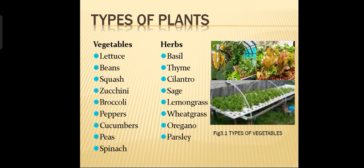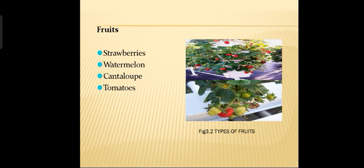In this method we can grow various types of plants, including vegetables and herbs. Vegetables include lettuce, beans, squash, zucchini, broccoli, peppers, and spinach. Herbs include basil, thyme, cilantro, seeds, etc. By this method we can also get various types of fruits such as strawberries, watermelon, cantaloupe, and tomatoes.